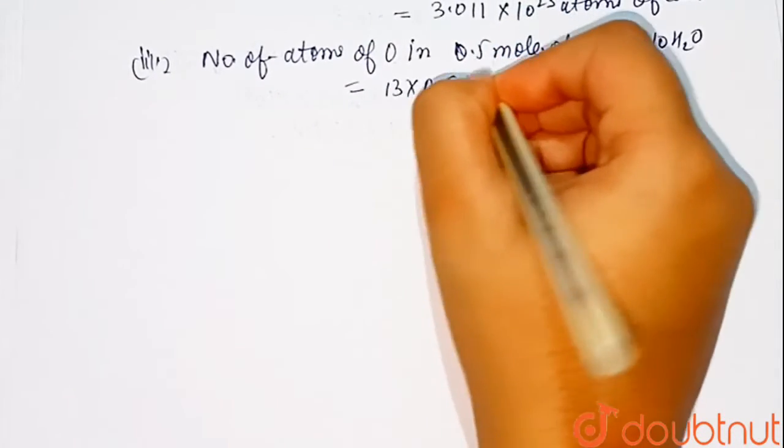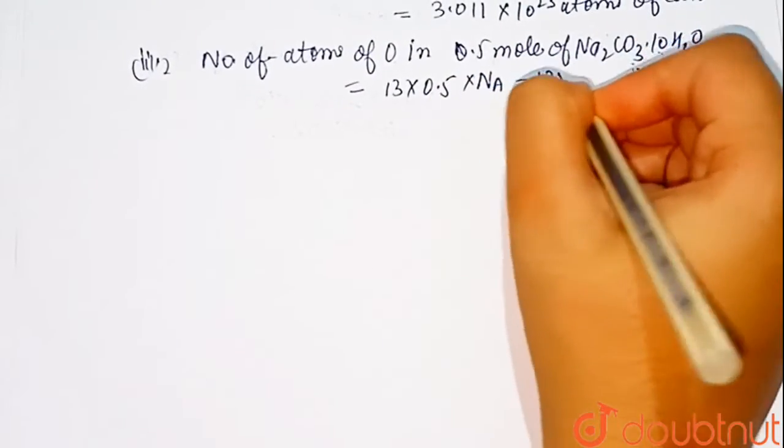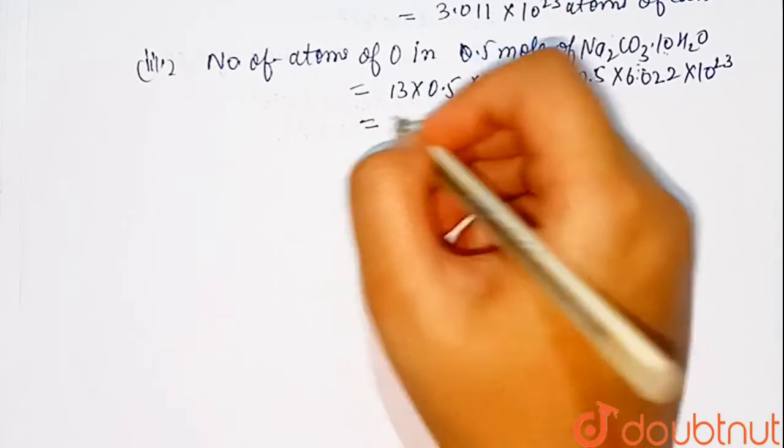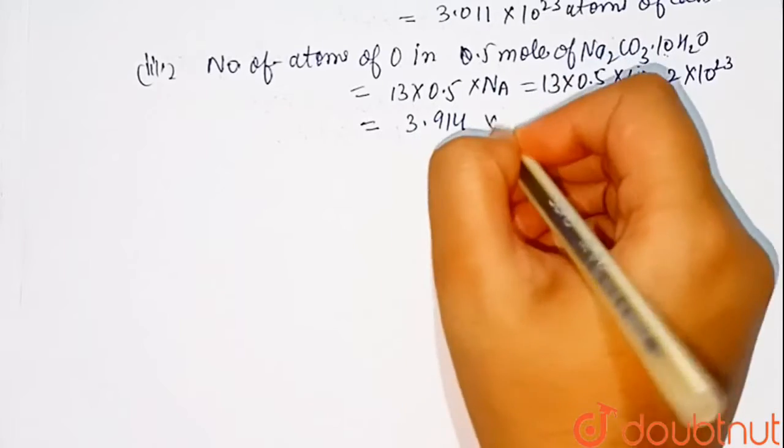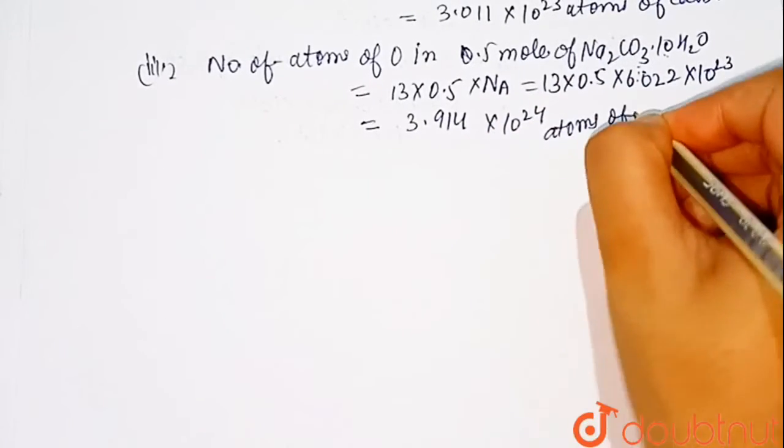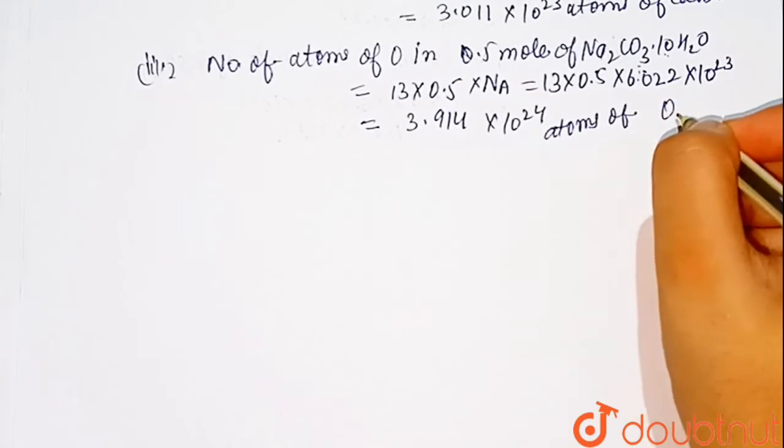So, 13 times 0.5 times NA which equals 13 times 0.5 times 6.022 times 10 raised to power 23 which equals 3.914 times 10 raised to power 24 atoms of oxygen.